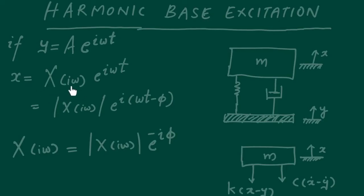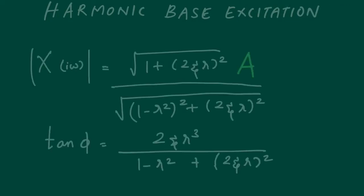We assumed the response takes a certain form, then calculated the magnitude of the amplitude and the phase. These are the set of equations we discussed which give the amplitude of the response. This is the magnitude of the response, but remember this capital A is the magnitude of the excitation — never forget to include it. Similarly, we found an expression for the phase as well.